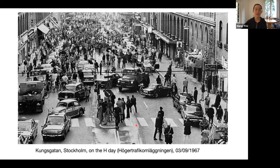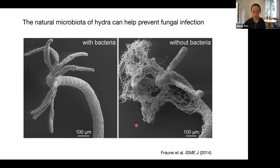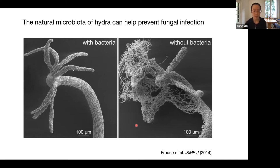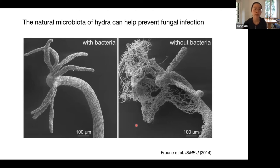Let's move on to a few examples from my own study of evolutionary games. The first example is bacterial interactions in the microbiota of the freshwater hydra. Many of you have probably heard that the natural microbiota on our skin and in our gut can protect us from infection by pathogenic microbes. This is also true for other species, like the freshwater hydra — this little animal you can see on the left side of the picture.